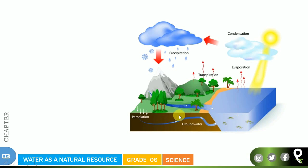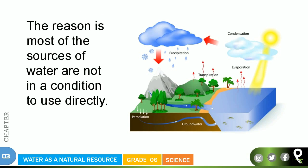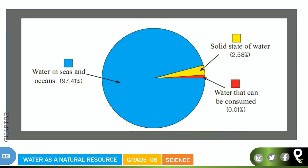The reason is most of the sources of water are not in a condition to use directly. Humans cannot drink sea water. Most of the water like that you can't use. How much water can you use on Earth? We're going to understand. Look at this chart: water in seas and oceans is 97.41%, solid state of water like ice cubes, glaciers, snow form is around 2.58%.